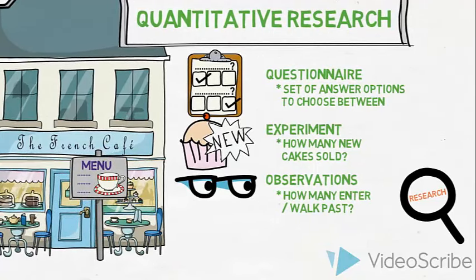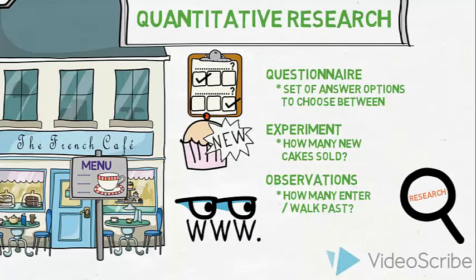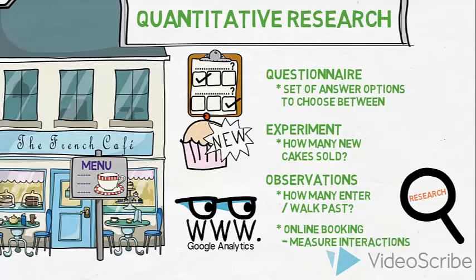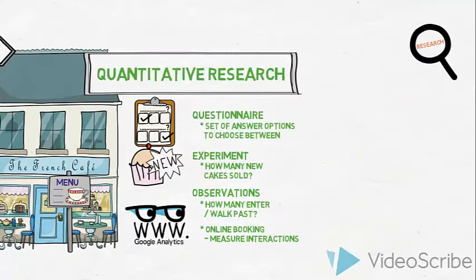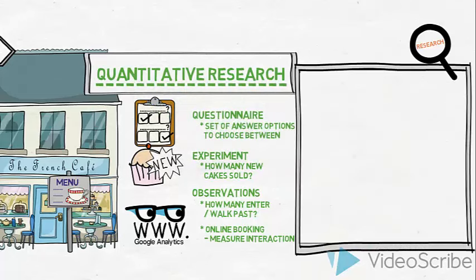Similarly, they could use Google Analytics to observe online behavior, for example, by measuring interactions with the book-a-table feature on their website. We call this type of research quantitative research.